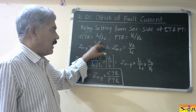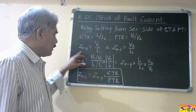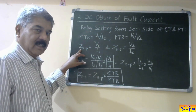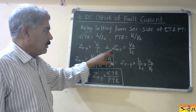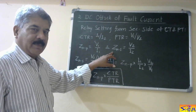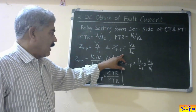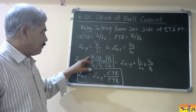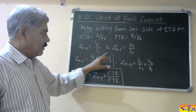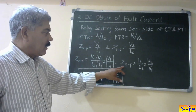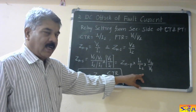Let us say CT ratio is I1 by I2, and PT ratio is V1 by V2. The primary side setting Zn — the reach of the relay or impedance setting from the primary side — is V1 upon I1. Zns, the impedance setting or reach from the relay side, is V2 upon I2. This can be written as (V2/V1) divided by (I2/I1) into V1/I1, which equals V1/I1 multiplied by I1/I2 into V2/V1.